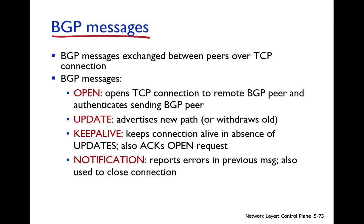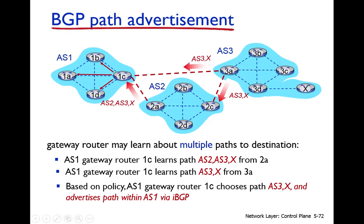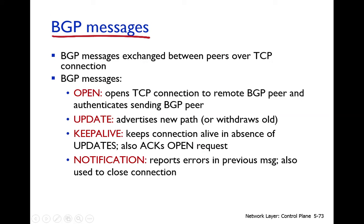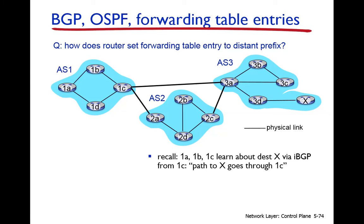When a gateway receives an advertisement from another autonomous system, this information is advertised to the rest of the routers. BGP has four types of messages: Open — used to open a TCP connection to a remote BGP router and authenticate the sender; Update — used to advertise a new path or withdraw an old path; Keep-alive — used to keep the connection alive in the absence of updates; and Notification — used for reporting errors in previous messages.